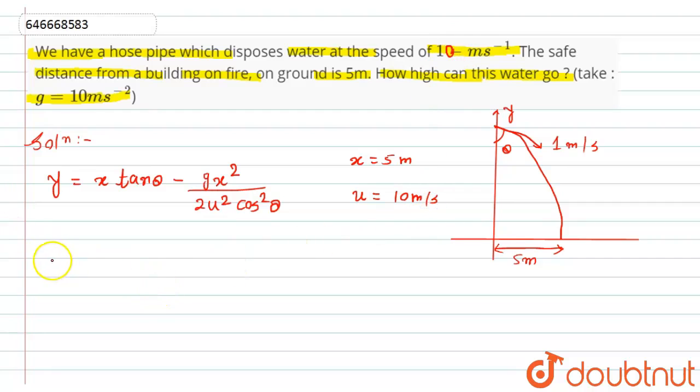According to this, if we calculate the trajectory: y = 5 tan θ - (g × x²), which is 10 × 5² = 10 × 25